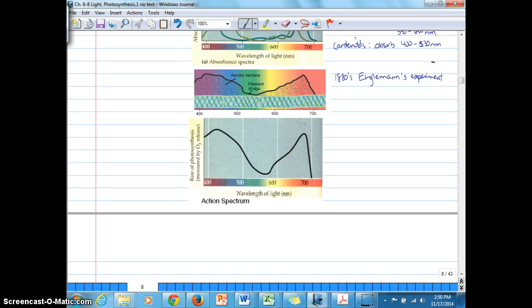Who conducted an experiment that was rather simple but showed in a very sophisticated manner the connection between pigments and light wavelengths rather. So in this diagram, we can see that there was a long filamentous alga here that was photosynthetic.